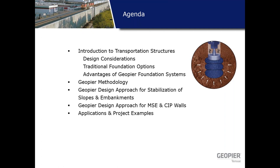The following topics will be discussed in the next 55 minutes of the presentation: types of transportation structures, traditional foundation options to support transportation structures, advantages of ground improvement systems, GeoPier methodology to design an adequate foundation system for transportation structures, design approach for stabilization of slopes, embankments, and MSE and cast-in-place walls. At the end, I will provide case histories for ground improvement or GeoPier-supported embankments and GeoPier-supported MSE walls.